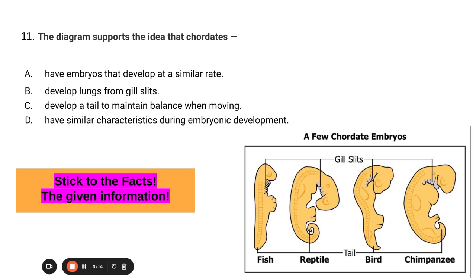The diagram supports the idea that chordates develop a tail to maintain balance when moving. Well, we do see a tail, but we don't see what they use the tail for. So we're getting rid of that one because again, we're sticking to the facts.